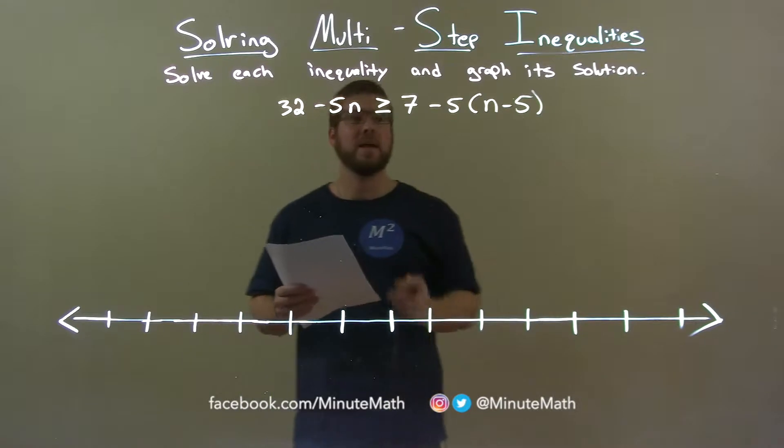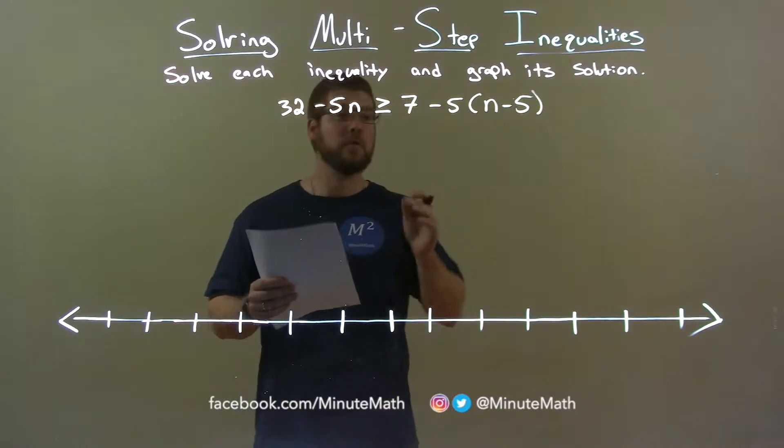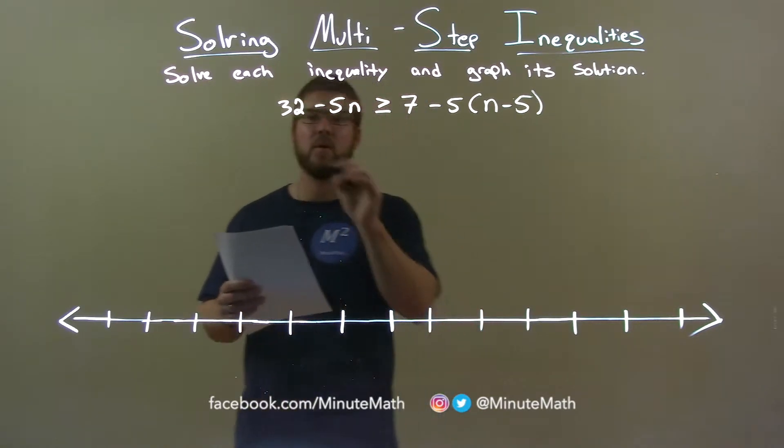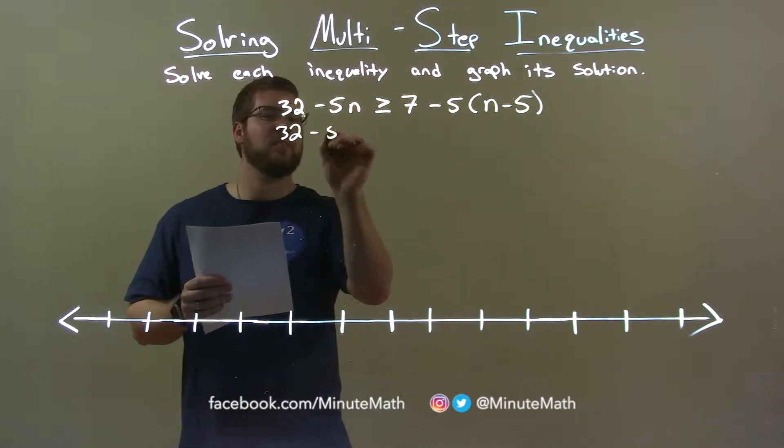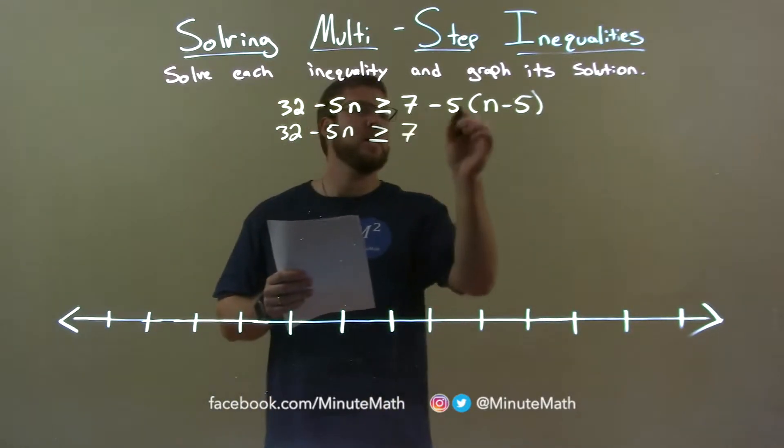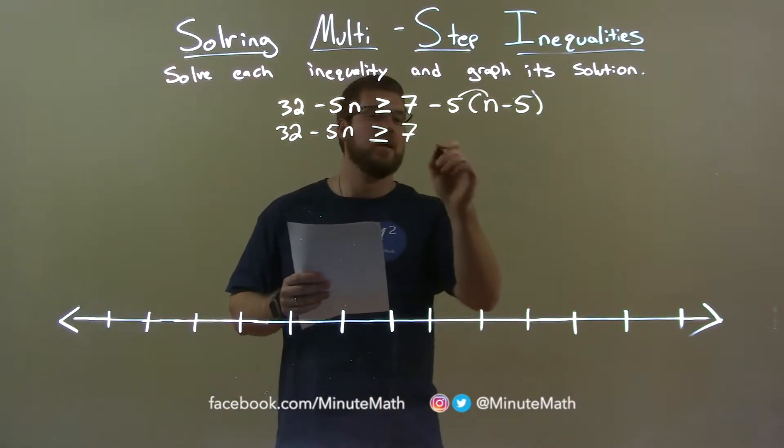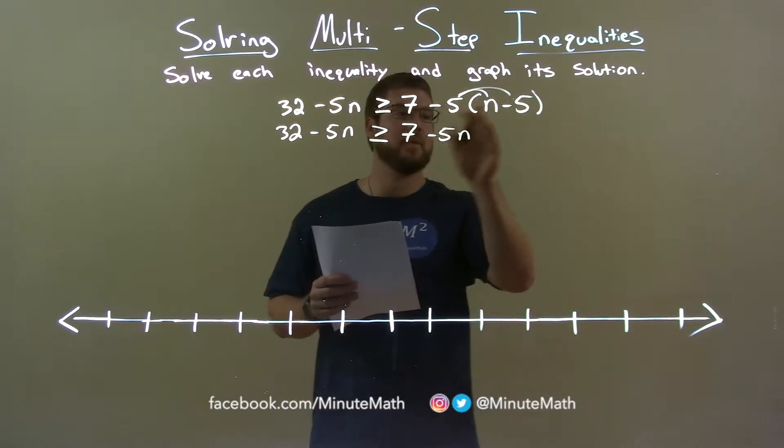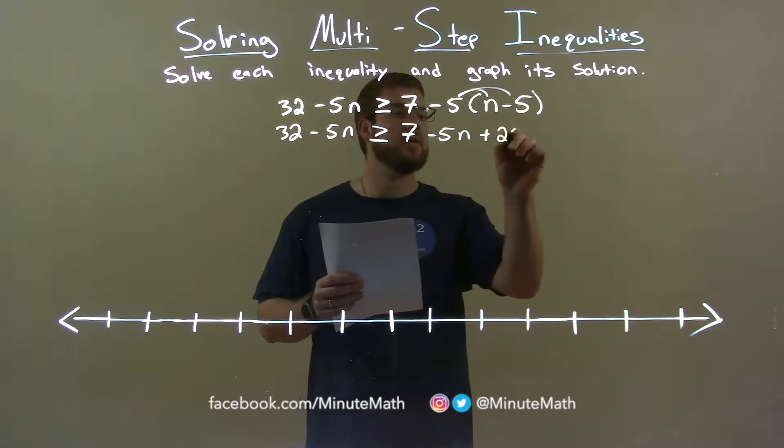Alright, we want to get n by itself. First step to doing that is actually to distribute the 5 inside that parenthesis. So, 32 minus 5n stays here and it's greater than or equal to 7 and now minus 5 times n is a minus 5n. And minus 5 times a minus 5, make sure you bring the negative over, is a positive 25.